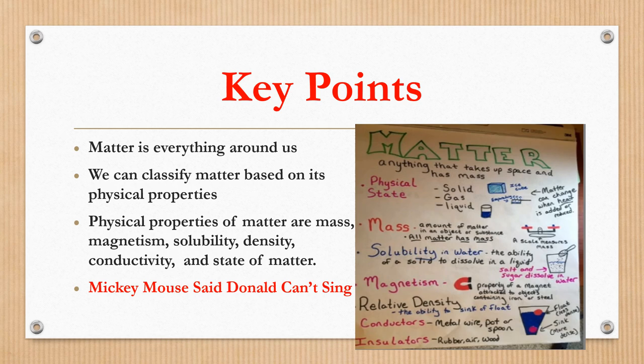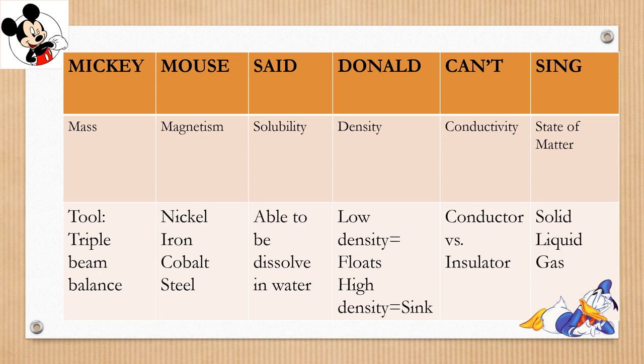We use our strategy Mickey Mouse Said Donald Can't Sing to remember the six properties of matter. M M stands for mass. Remember that we can use a triple beam balance to measure mass in grams.